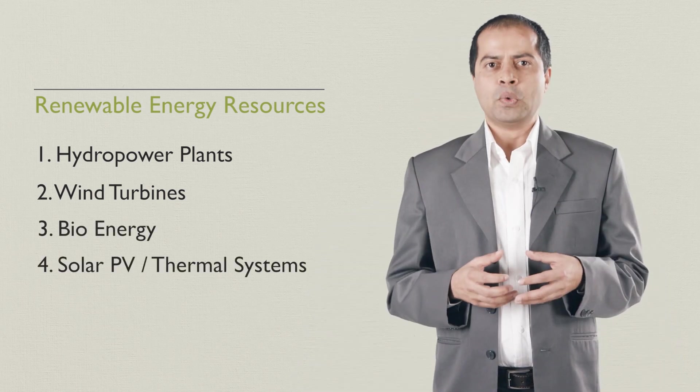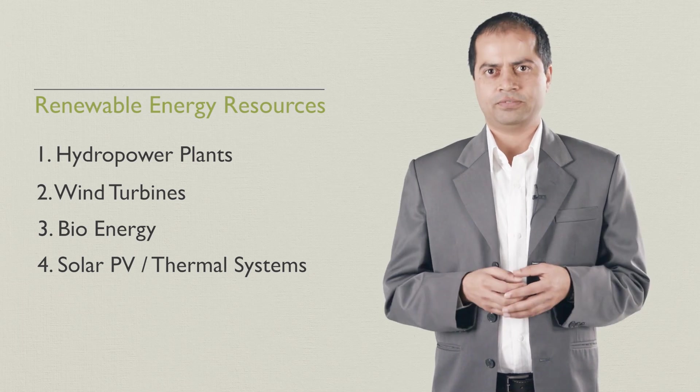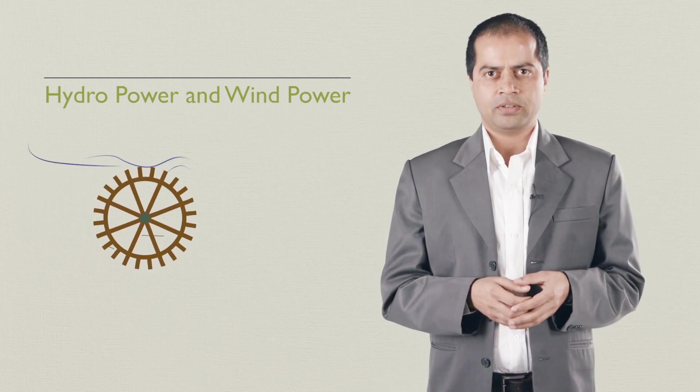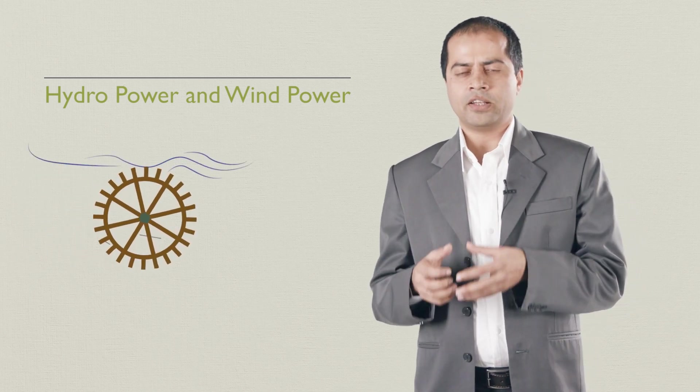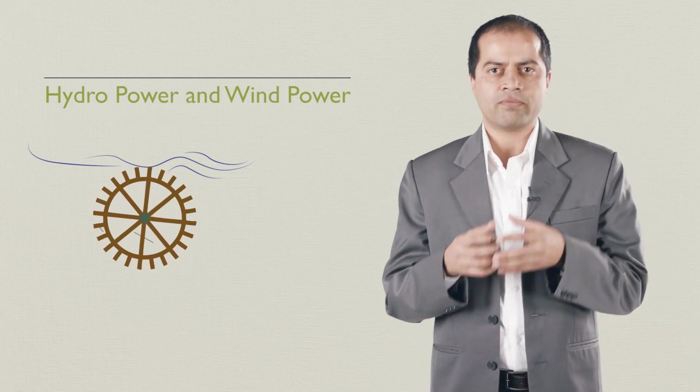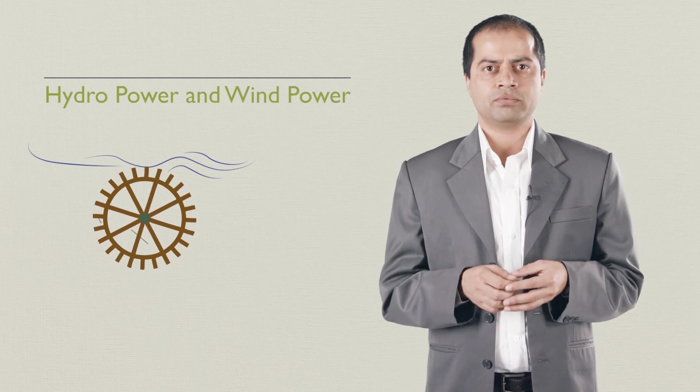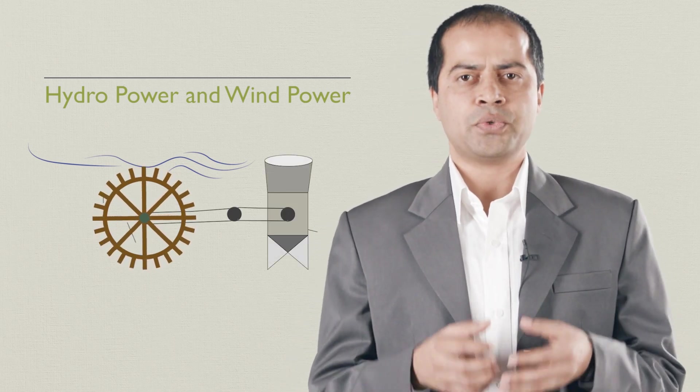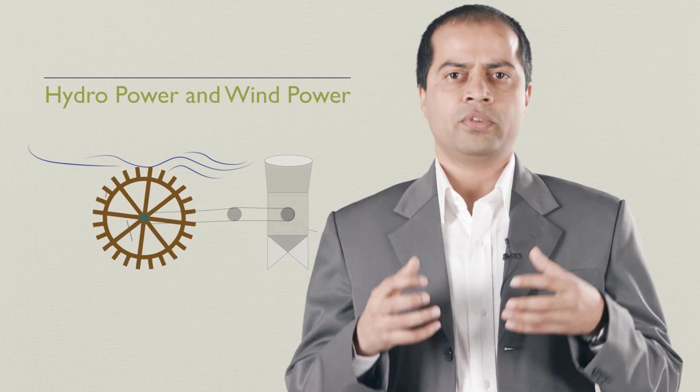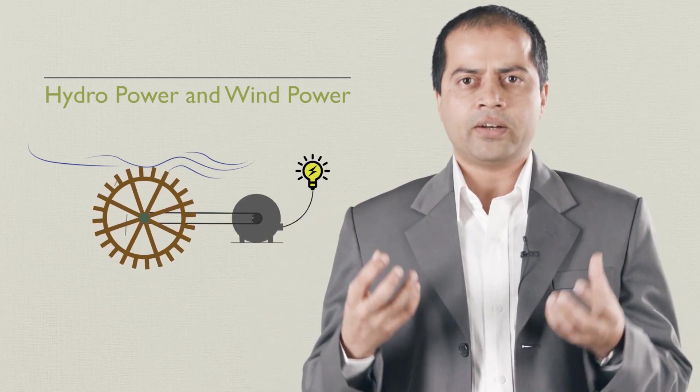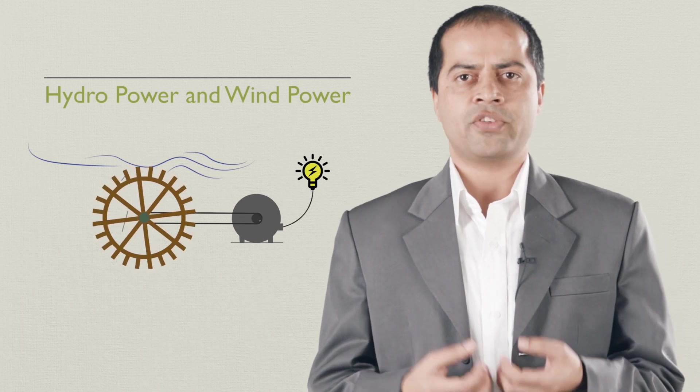Let us take a look at the use of wind and water resources first. Hydro-power and wind energy systems have similar working principle. They convert the kinetic energy of moving fluid into mechanical energy using a turbine. In hydropower plant, the moving fluid is water and in wind turbine, it is air. The resulting mechanical energy at the rotating shaft can be used as such or it can be converted into electricity using a generator. Electrical energy is the most versatile form of energy as you know.